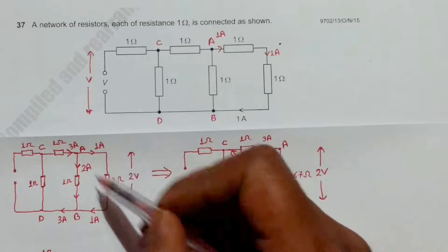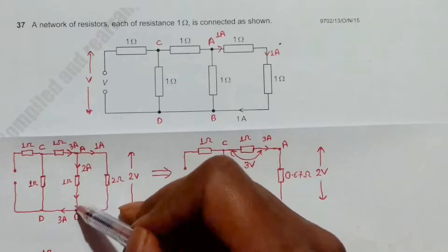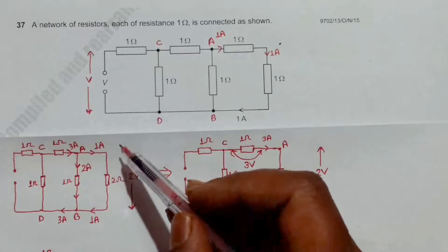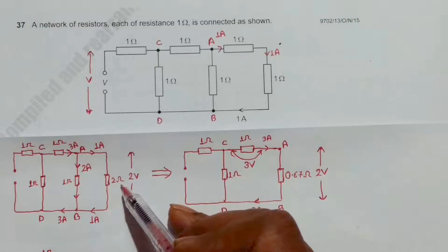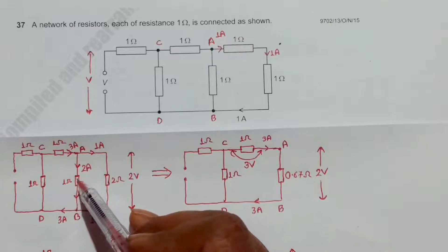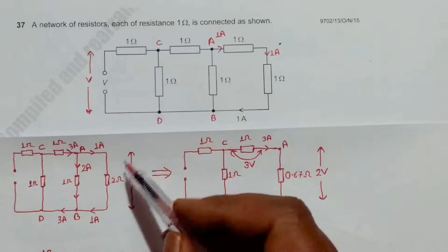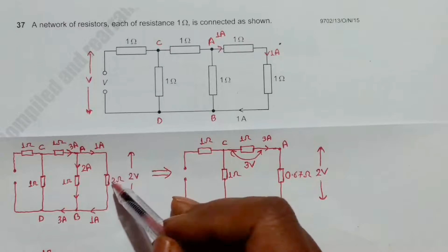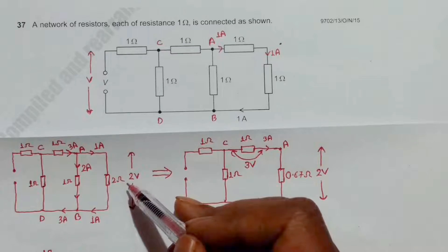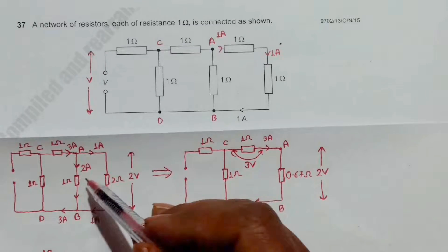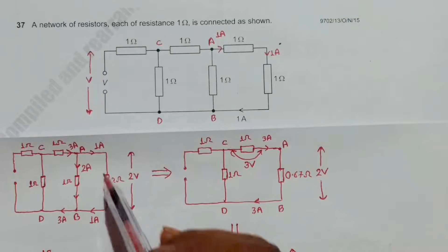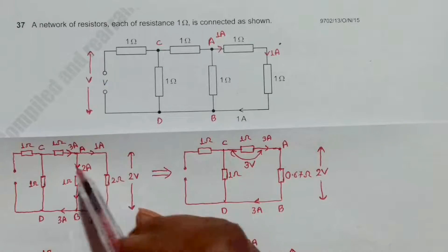The PD across these two points should be equal to 2 volt. Now since we have a 2 ohm resistance here and a 1 ohm resistance here, the current through the 1 ohm branch should be more. It will be 2 ampere, because the current through the 2 ohm is 1 ampere, so the current through 1 ohm must be 2 ampere since the PD is the same.